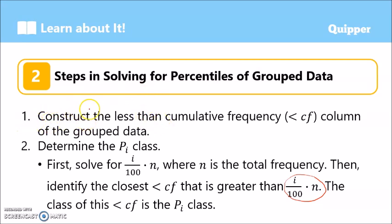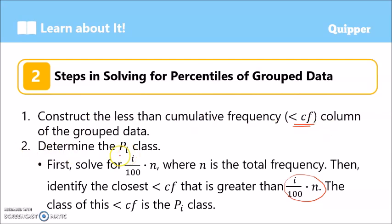First, you have to construct the less than cumulative frequency column of the group data. If the frequency distribution table does not yet have a less than cumulative frequency column, then you have to construct it. Once you have the less than cumulative frequency column, proceed to step 2, which is to determine the P sub i class.